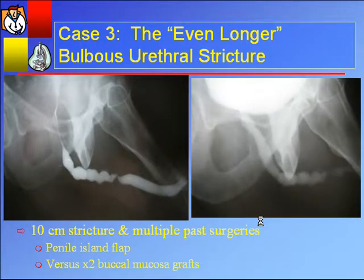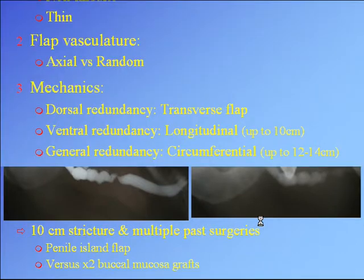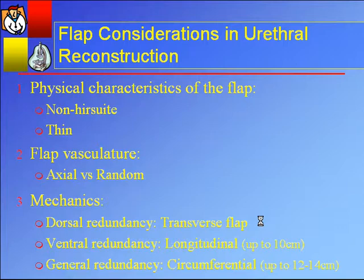This can be transposed after dissection essentially all the way to the prostatic apex — if you dissect all the way down to the base of the penis, that dartos pedicle is highly mobile. When would you consider a flap? In somebody who's again a young patient with numerous urethrotomies and a ten-centimeter bulbous urethral stricture. When considering a flap, three characteristics primarily: physical characteristics — should be non-hirsute and very thin; vascular pedicle — you want an axial blood supply, a very predictable blood supply; and mechanics — how you elevate the flap. Someone with a lot of dorsal penile skin redundancy, a transverse flap is optimal; ventral redundancy, a longitudinal flap may be adequate. Most people generally use a circumferential penile island flap.